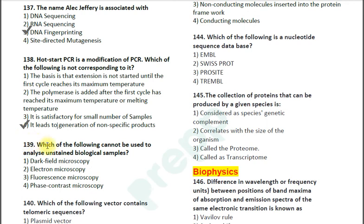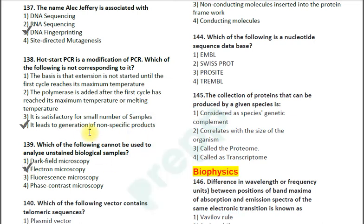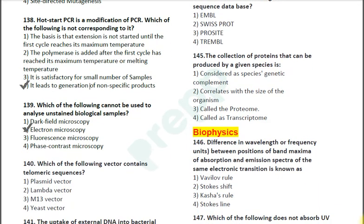Question number 139: Which of the following cannot be used to analyze unstained biological samples? Options: 1. dark field microscopy; 2. electron microscopy; 3. fluorescence microscopy; 4. phase contrast microscopy. The correct answer is option 2 — electron microscopy. In electron microscopy, both positive and negative staining methods are used, whereas the other three are unstained methods where the sample does not need to be stained.